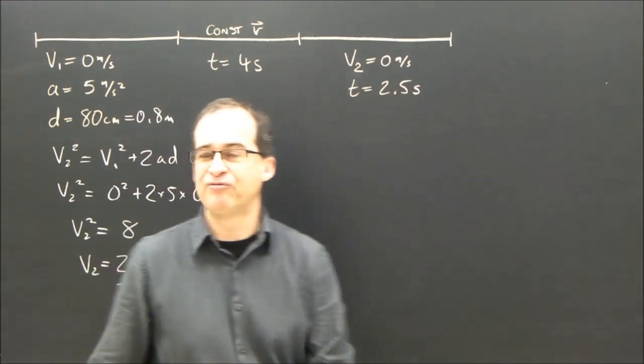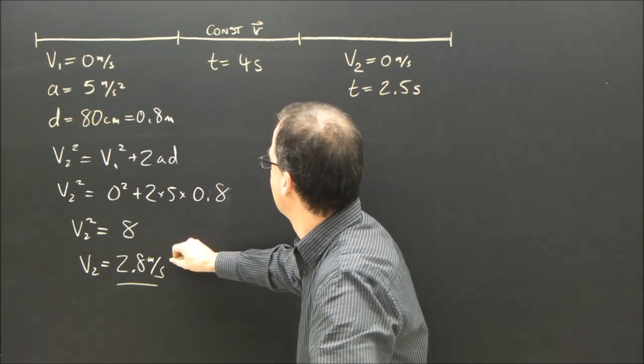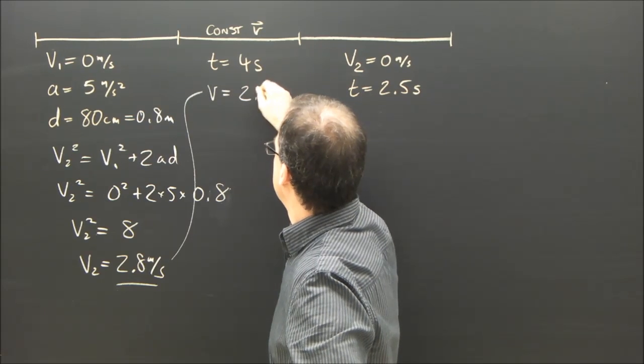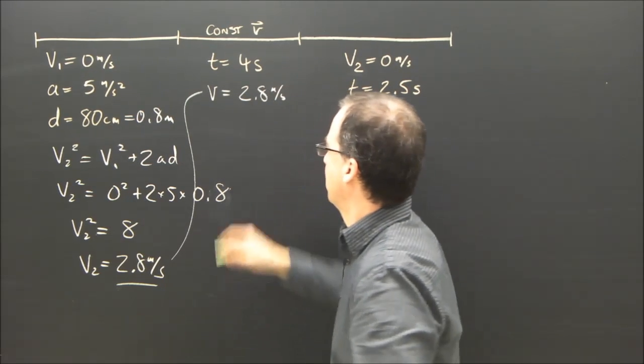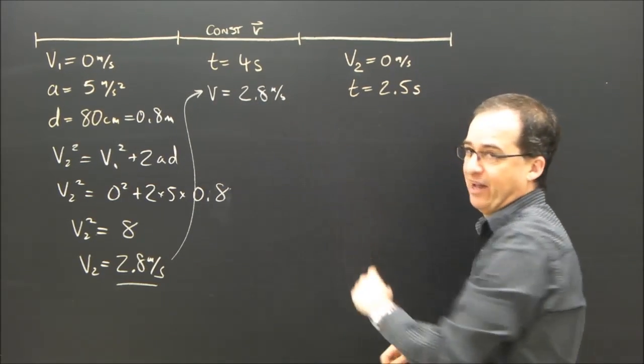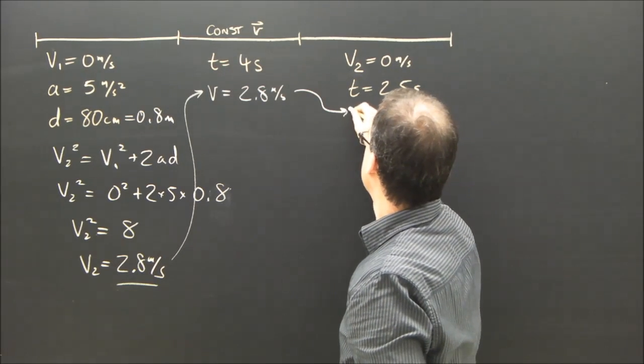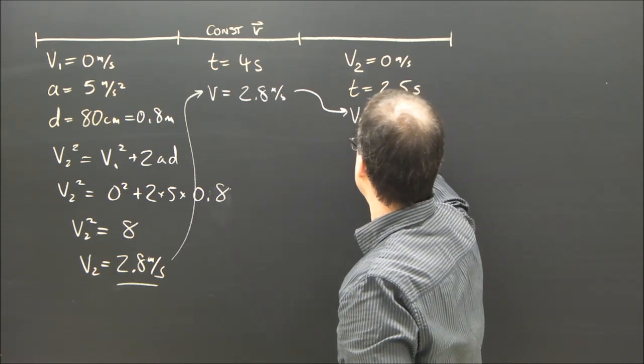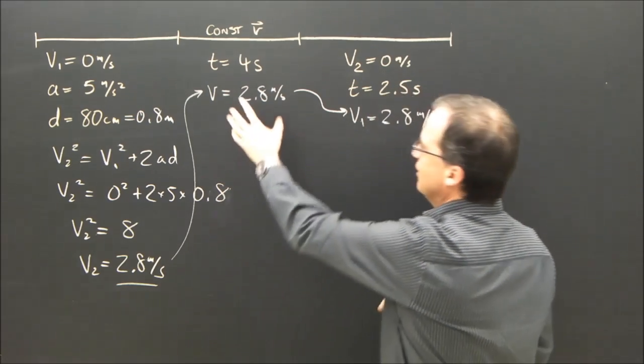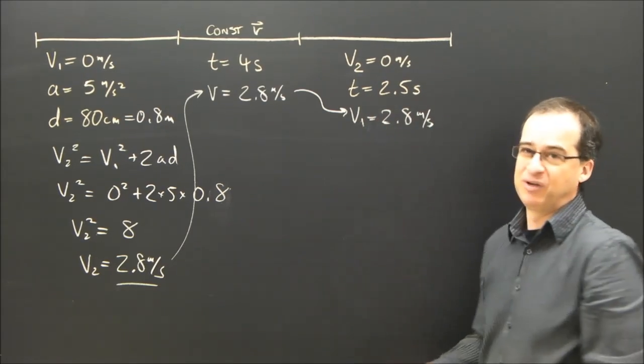I now know how fast it was going at the end of this interval, and that's important, because this number is equal to the velocity in this section, 2.8 m/s. And this velocity that it stays at in this section is the velocity it enters this section at. So in this section, v₁ is 2.8 m/s. Now I've got two here, I need two to find the third. I've got three here, I need three to find the fourth.